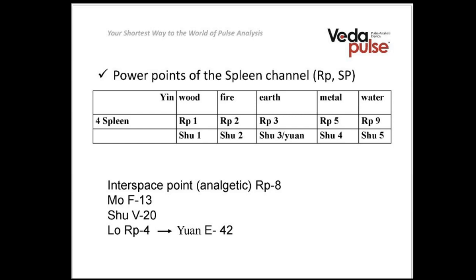The Mu and Shu points are also very good for diagnosis. For this system, they will be F13 and V20. The Shu point, V20, is located one and a half cun from the posterior middle line, between the spinous processes of the 11th and 12th thoracic vertebrae. You can find it by touching your back and feeling the last rib, which connects to the 12th thoracic vertebra — just above the last rib is point V20, called Pi Shu in Chinese.